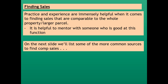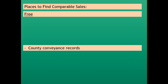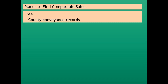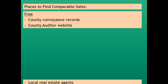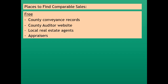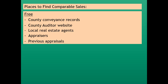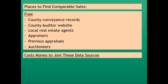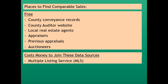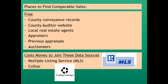Here are some of the more common sources to find comparable sales. The first ones happen to be free: county conveyance records, the county auditor's website, local real estate agents, appraisers who appraise in that area, past previous appraisals in your files, or auctioneers. The next group costs money to join: the Multiple Listing Service (MLS) and COSTAR.